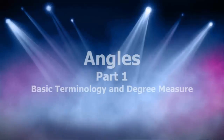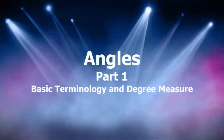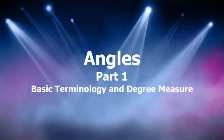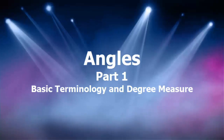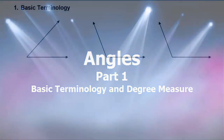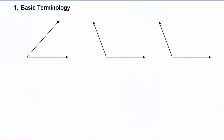In this video lesson you'll learn about the basic terminology and degree measures of angles. Let's start off by looking at the parts of an angle. The point where the two sides of the angle intersect is called the vertex.